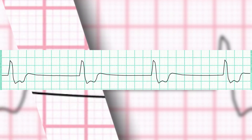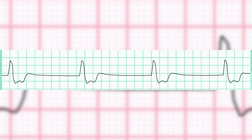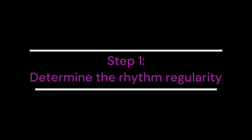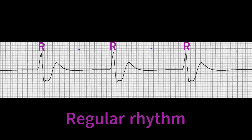Now, let's take a closer look at the EKG analysis of idioventricular rhythm. Step 1: Determine the Regularity of the Rhythm. Idioventricular rhythm exhibits a very regular rhythm — the R to R intervals are identical and consistent.